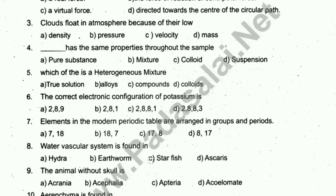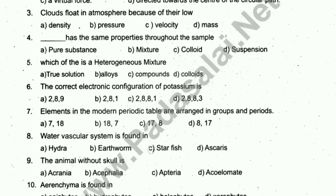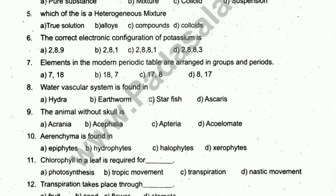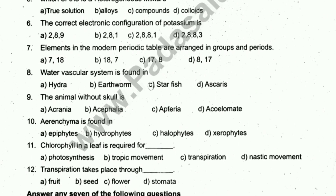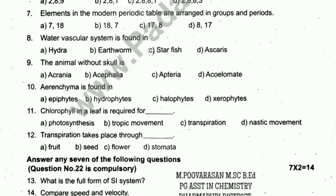First, let's see the questions. The S.I. unit of length is dash. The centrifugal force is dash. The animal without a skull is Aranth. Kaima is found in — dash. Chlorophyll in a leaf is required for — dash. Transpiration takes place through Stomata.